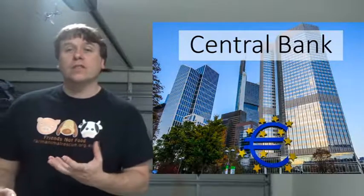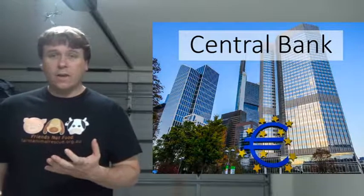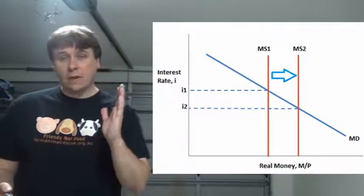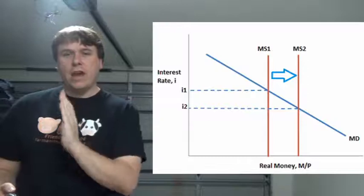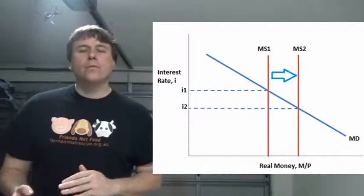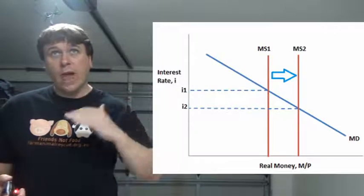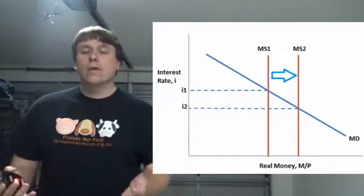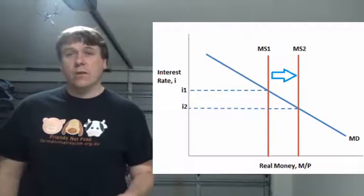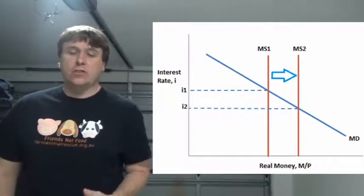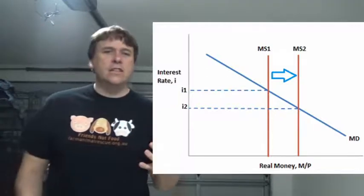How does expansionary monetary policy work? If you increase the money supply — shifting it to the right — that causes interest rates to go down. At a lower interest rate, banks follow suit and lower their rates too. People then have a higher tendency to borrow — whether for investment purposes or personal consumption, like buying a bigger house or getting a car on hire purchase — and that stimulates the economy.